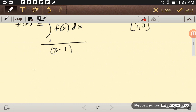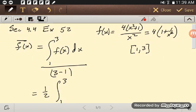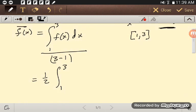So that is equal to 1 half from the 1 over 3 minus 1 times the integral of 1 to 3, and I'm going to write it that way just because it will be easier to do the antiderivative.